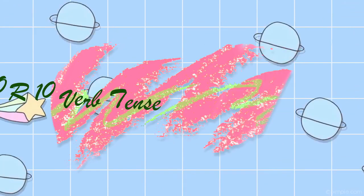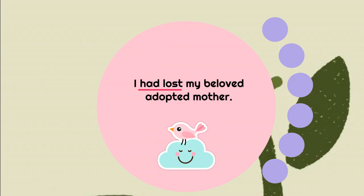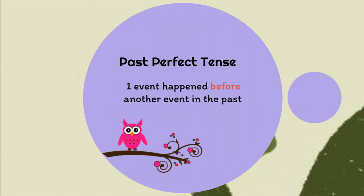Error 10: Verb tense. Example: 'I had lost my beloved adopted mother.' This sentence is using the wrong verb tense. First, we need to know about tense — how to use it and when to use it. Past perfect tense is used to make clear that one event happened before another event in the past. It doesn't matter which event is mentioned first; the tense makes it clear which one happened first. We use this tense when we have two past events to describe, and the event that happened first will be in past perfect form.